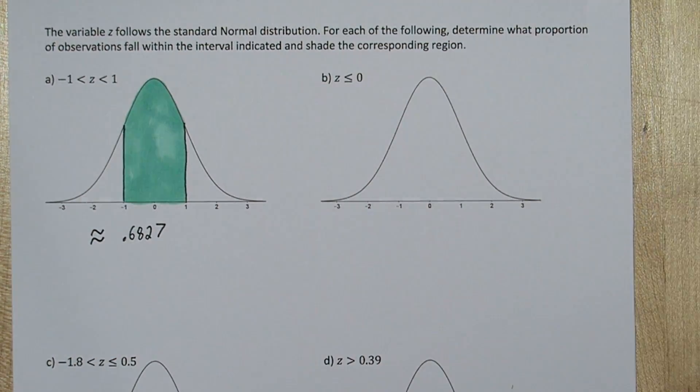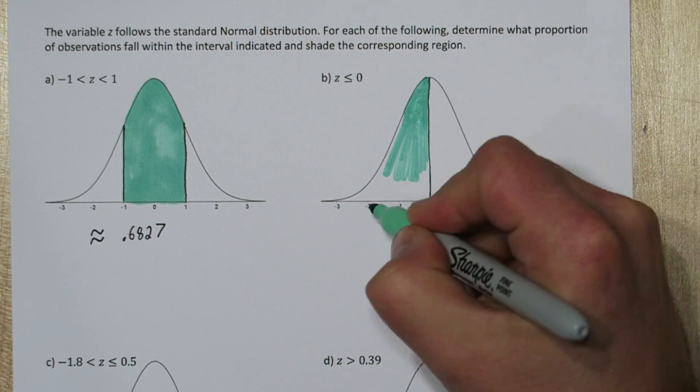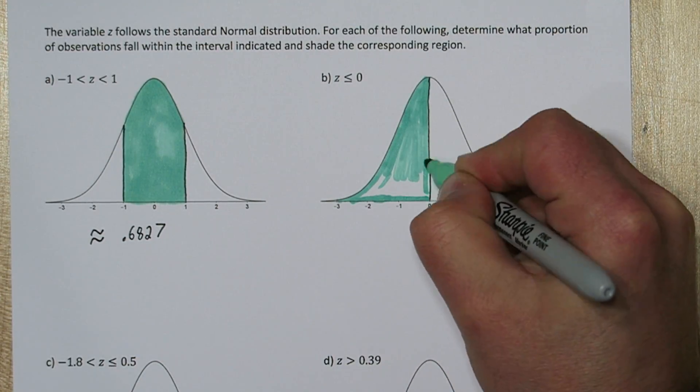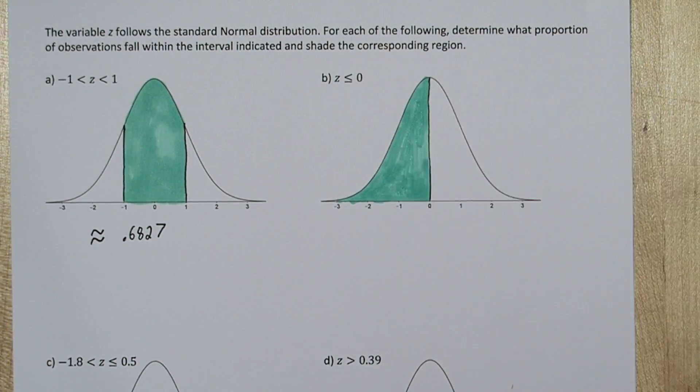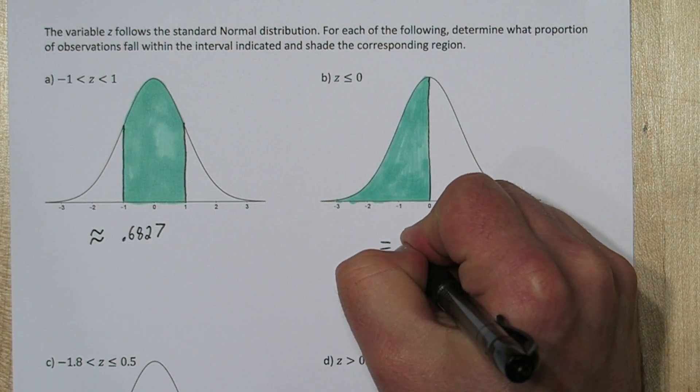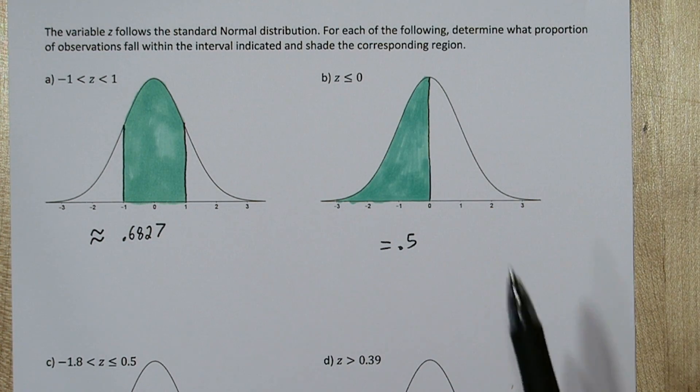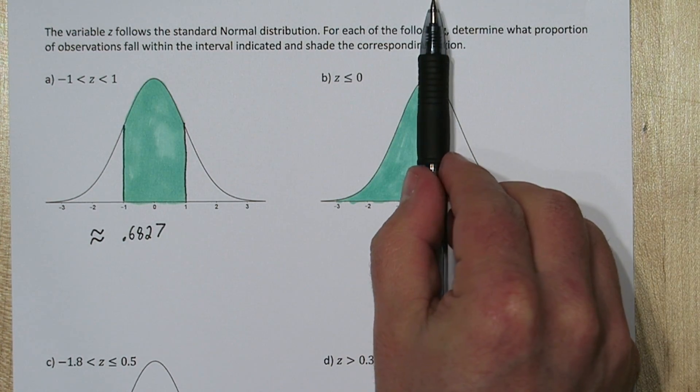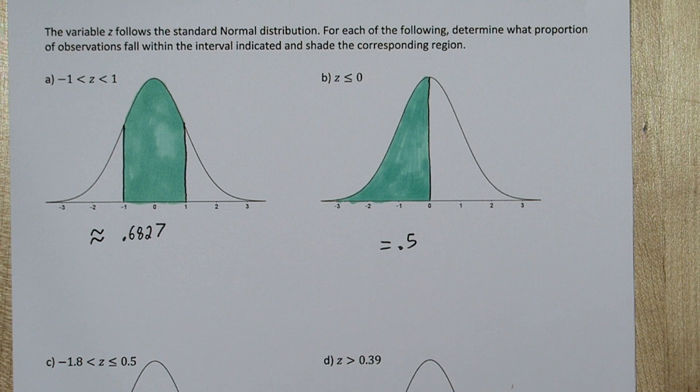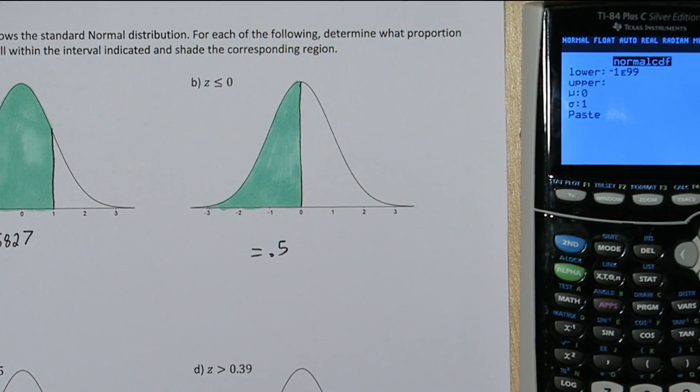On the next one, we're interested in the area being less than or equal to 0. I don't even think we need a calculator on this one. I actually know the area is exactly half. If the entire area under the curve is 1, and we're interested in everything to the left of the middle, that would be half. But let's do it on the calculator just for fun.